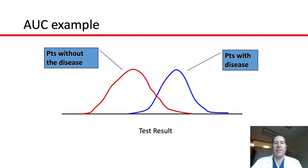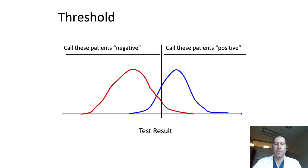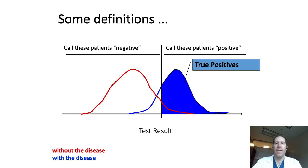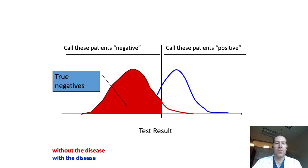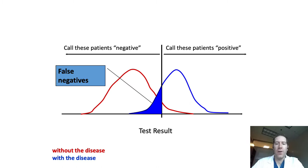In order to determine the specificity and sensitivity of a test, you need to have a threshold. We arbitrarily say this is our threshold — if the value is less than where this line is, you call the patient negative; if it's more, you call the patient positive. The blue group of men who truly have prostate cancer and have a positive test are the true positives. Men who do not have prostate cancer who tested positive are false positives. To the left of the threshold are true negatives — patients without disease who tested negative — and false negatives are those with prostate cancer who tested negative.